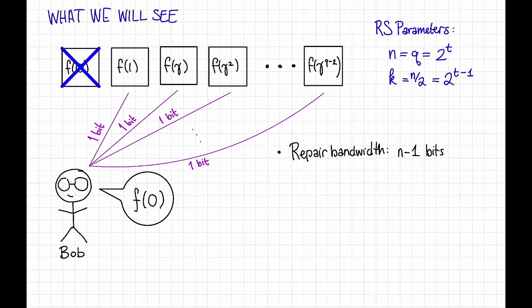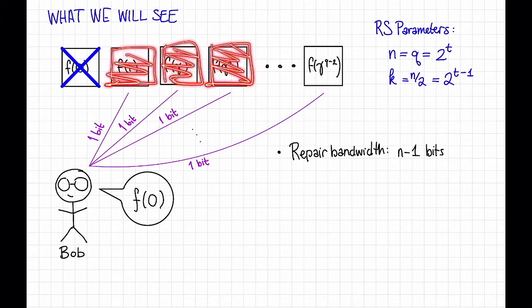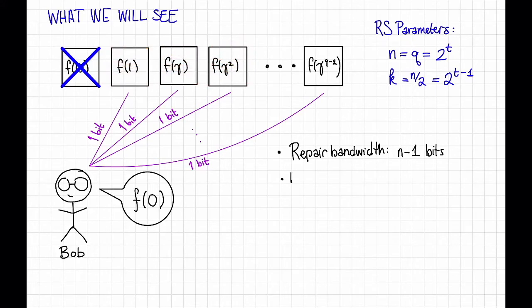What the naive scheme would do is just to say, okay, so this is a Reed-Solomon code of dimension n over 2, so I'm just going to contact n over 2 of these different nodes, I will download all of the information on them, and then I will do polynomial interpolation to recover the polynomial f, and then I'll recover all of the data. For this, the bandwidth is k times t, because we contact k different nodes, and we download t bits from each of them. That's because each one of these servers is storing a field element in f2 to the t, and it takes t bits to write down such a field element.